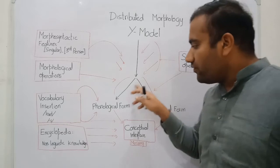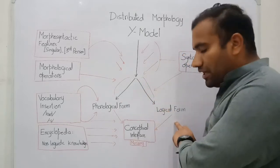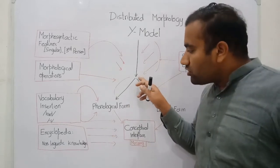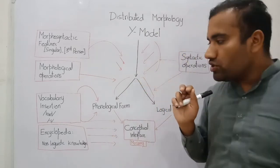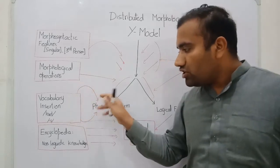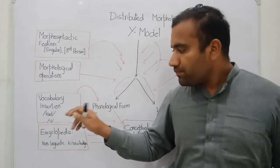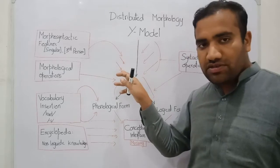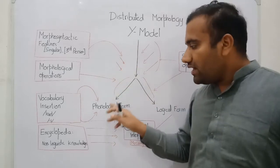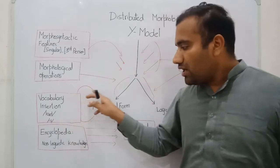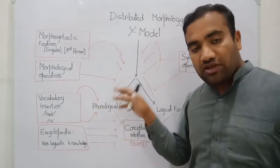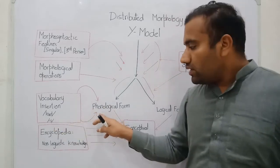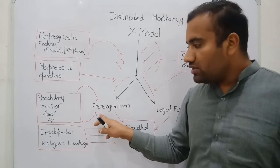One layer is the phonological layer and the other is logical form — the logical form and phonological form. This is related to semantics and this is related to phonology. When the derivation is split at this portion, vocabulary is being inserted. For example, we can say 'cat' — vocabulary has been inserted. The abstract frame has been made syntactically, and at this level vocabulary has been inserted within that abstract frame.